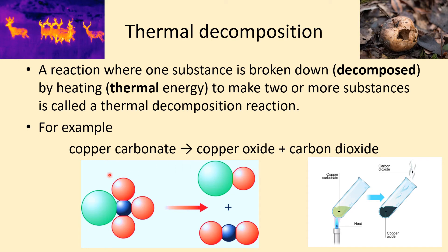Here's an example. We've got copper carbonate on the left, and that's breaking down to make copper oxide and carbon dioxide. This diagram is showing you the same thing, but it's showing you what those chemicals look like. Copper carbonate has this lovely green color.